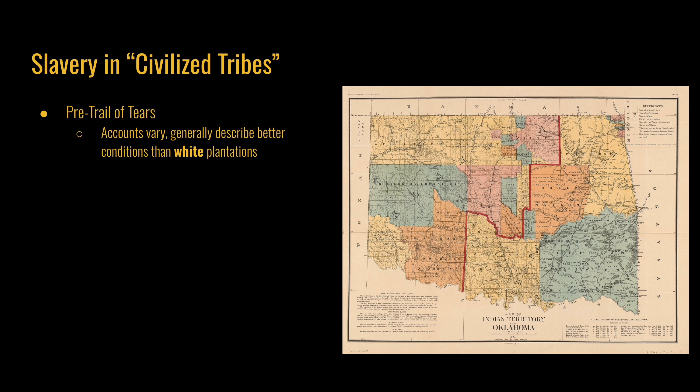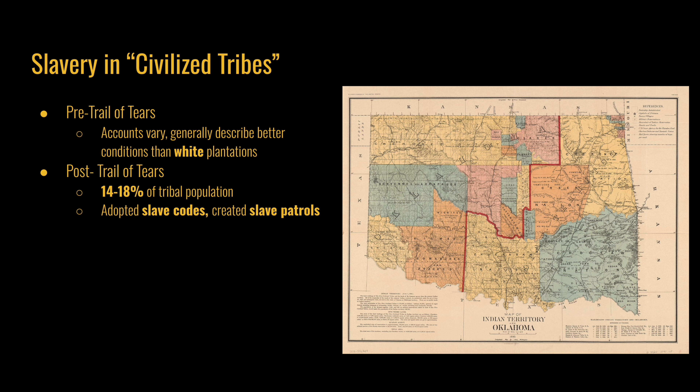Before the Trail of Tears, the accounts of slavery inside the civilized tribes varied greatly. The conditions for enslaved people are generally described as better than those on white plantations. After the Trail of Tears, it seems the civilized tribes adopted a harsher form of slavery, possibly because of the new, harsher territory in which they had to live, the profitability of cotton as a cash crop, or to continue trying to assimilate with white American institutions.